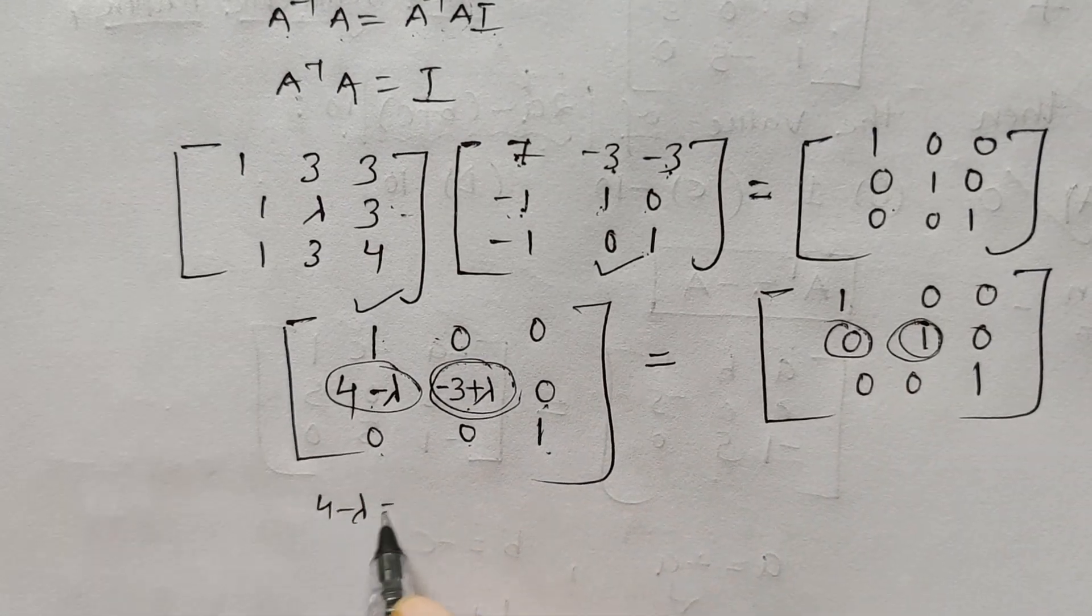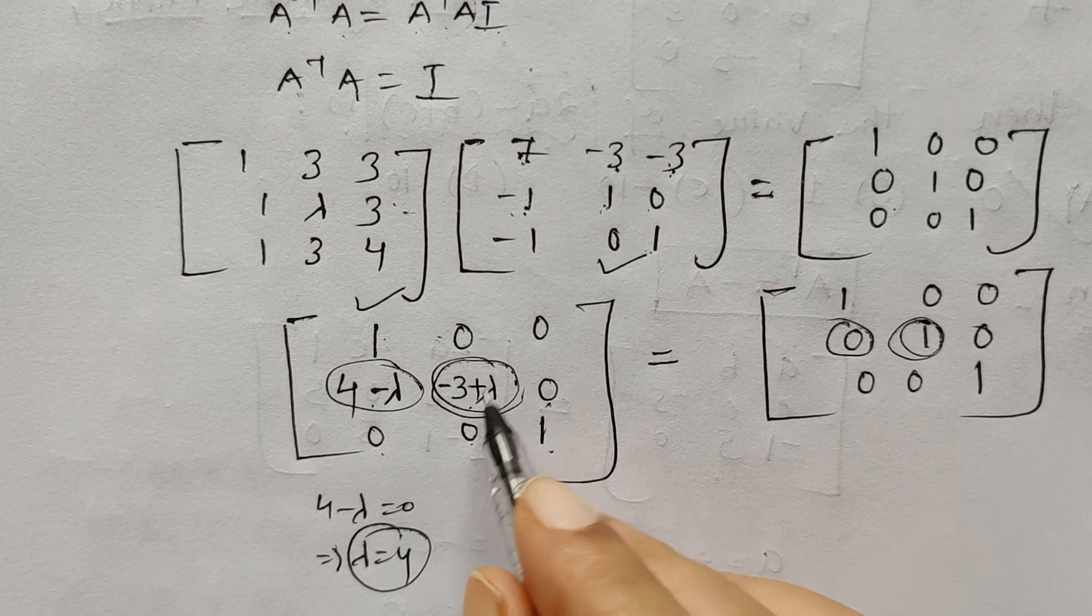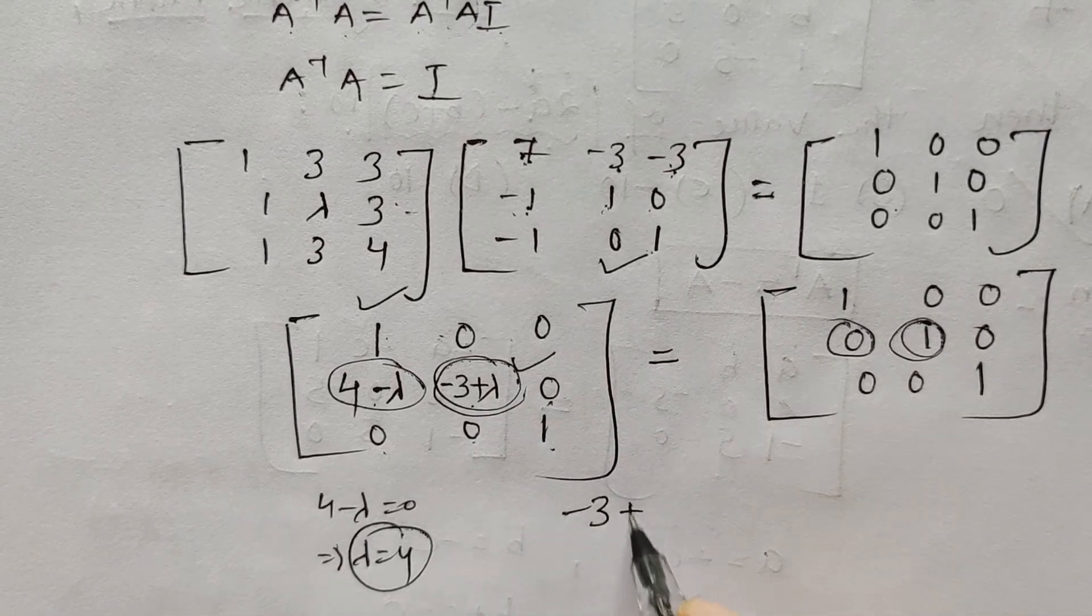Similarly, if I compare this element: minus 3 plus lambda equals 1. What I get? 1 plus 3, which is 4. So lambda equals 4 from both equations.